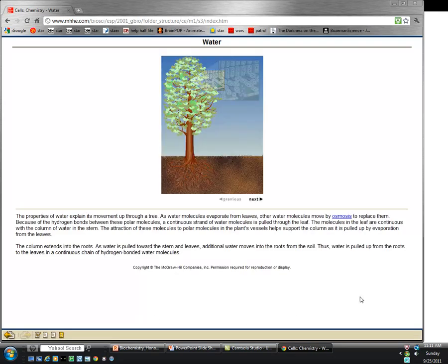The properties of water explain its movement up through a tree. As water molecules evaporate from leaves, other water molecules move by osmosis to replace them. Because of the hydrogen bonds between these polar molecules, a continuous strand of water molecules is pulled through the leaf. The molecules in the leaf are continuous with the column of water in the stem. The attraction of these molecules to polar molecules in the plant's vessels helps support the column as it is pulled up by evaporation from the leaves.